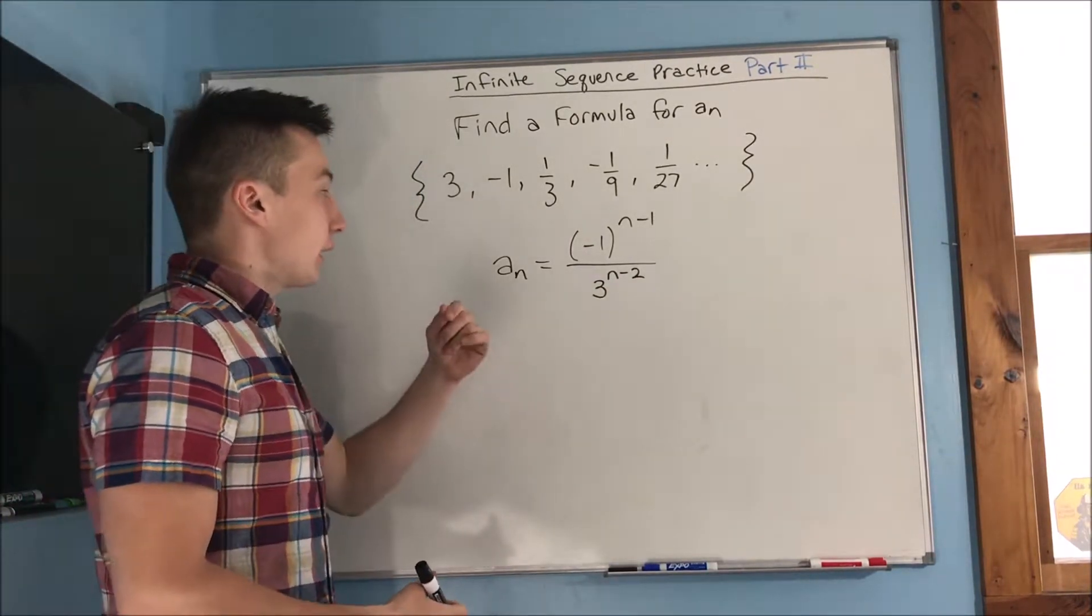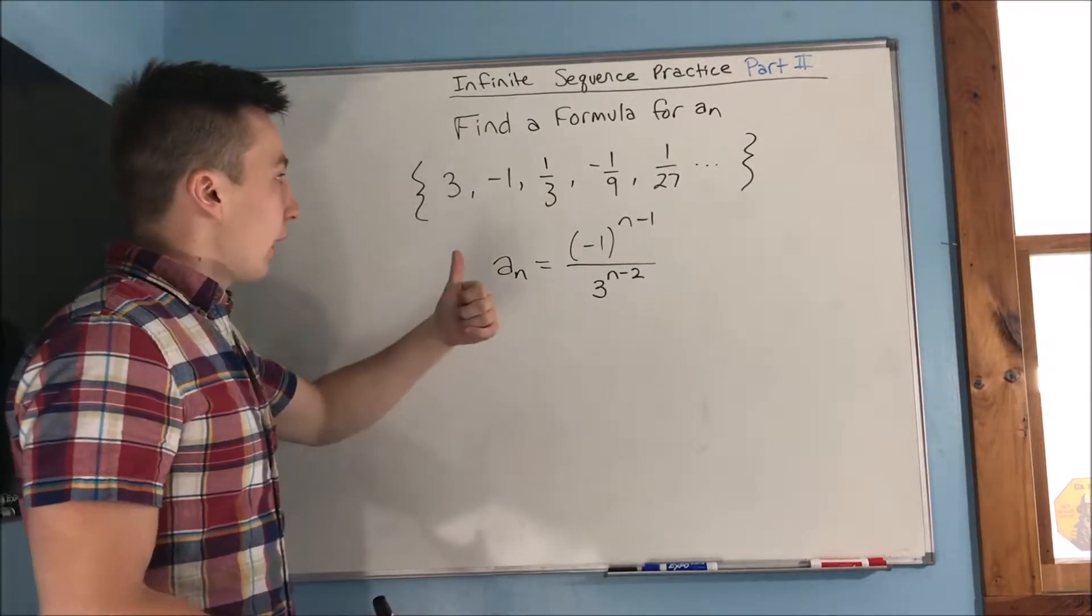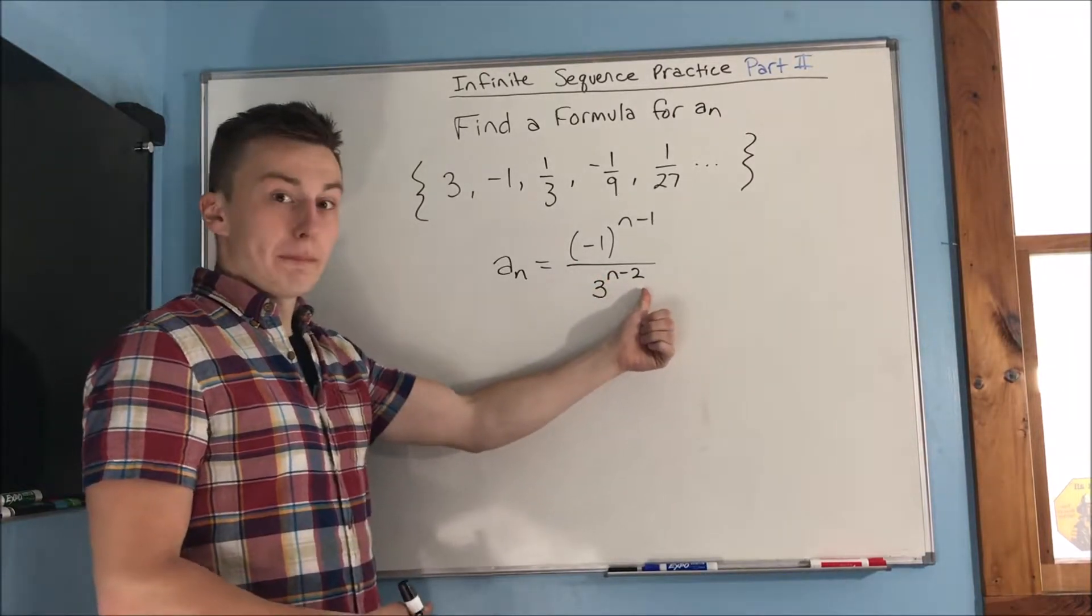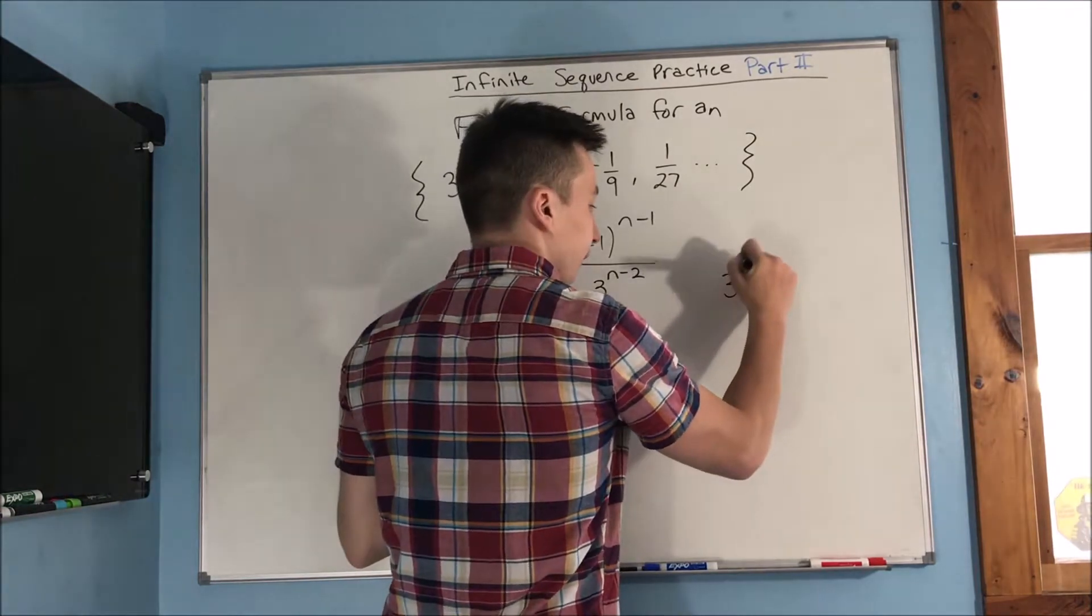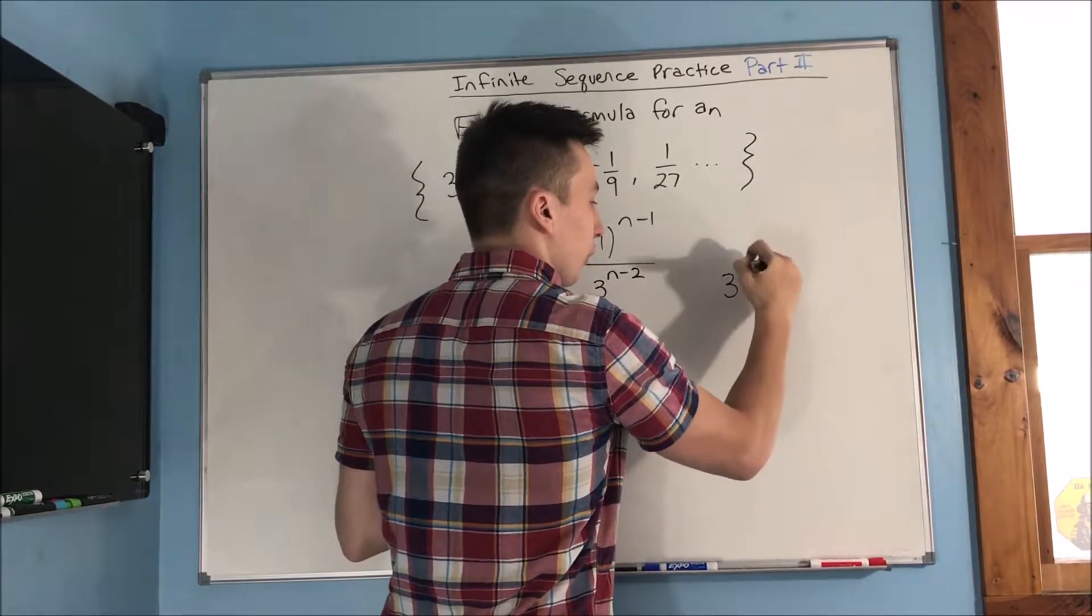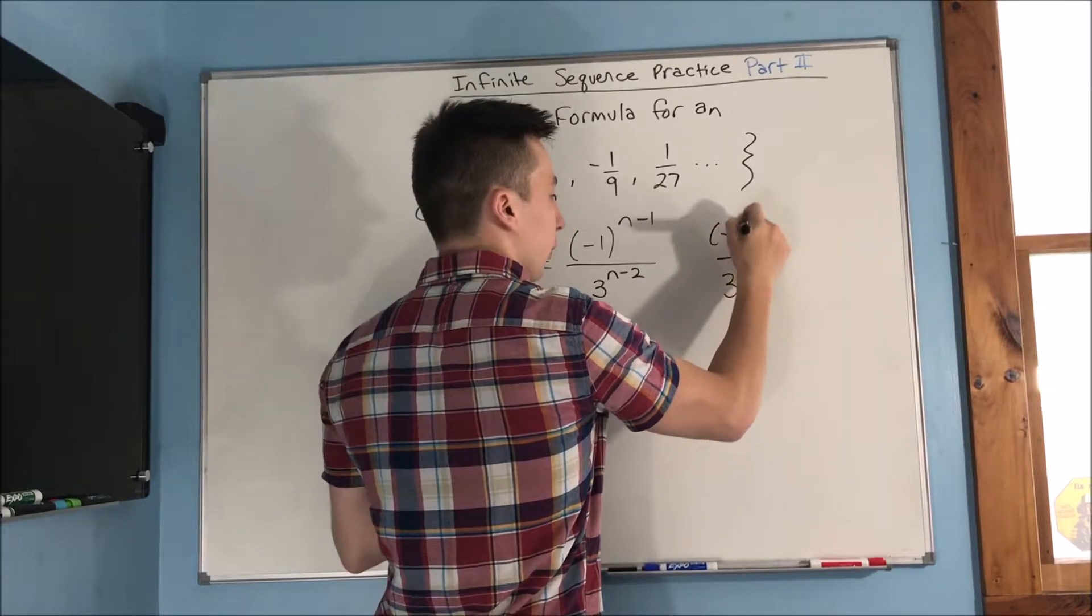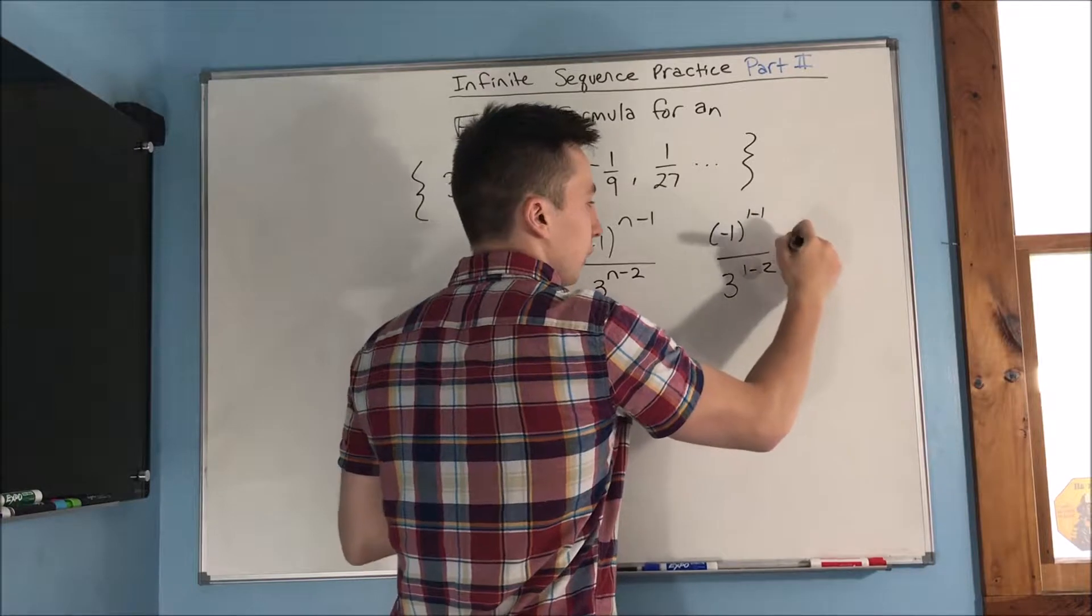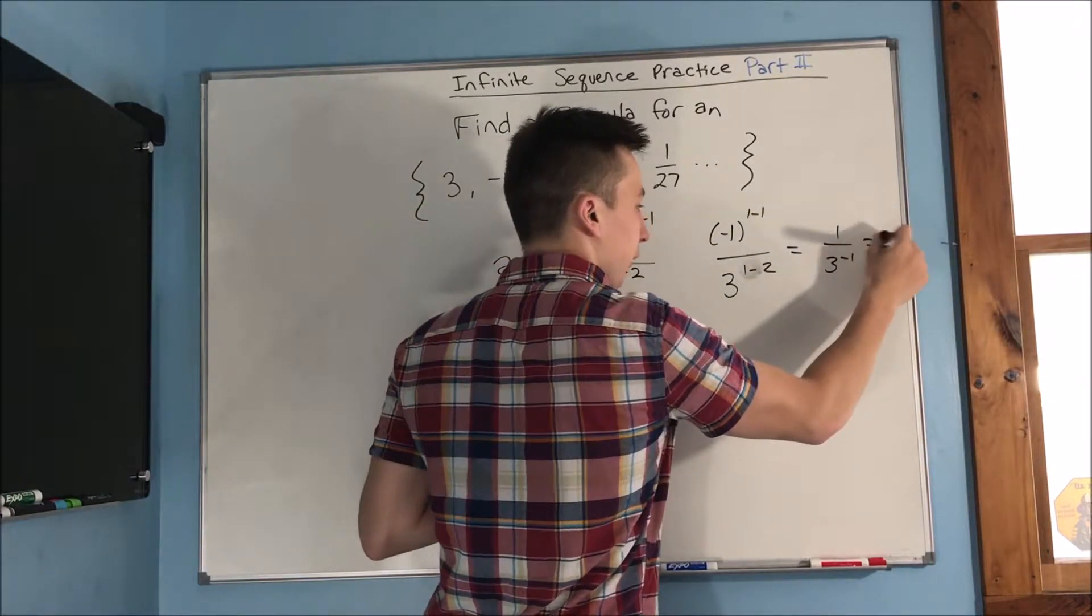You can also see that this will work for this negative one in the three because let's say this first term, we'll get a three to the negative one because we'll have a three to the one minus two. That's going to give us three to the negative one in the denominator. To the one minus two, I'll just write that out I guess, and we'll get a negative one to the, for one minus one, so we're going to get a one over three to the negative one, which is equal to three.